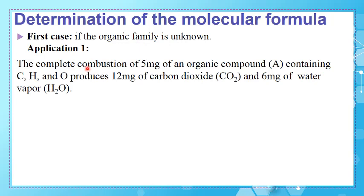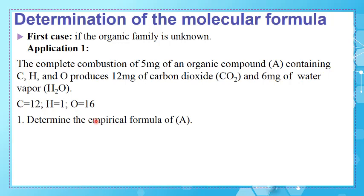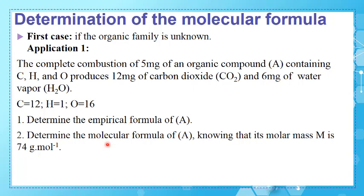The complete combustion of 5 mg of an organic compound A, containing only carbon, hydrogen, and oxygen, produces 12 mg of carbon dioxide and 6 mg of water vapor. We have three instructions: first, determine the empirical formula; second, determine the molecular formula given its molar mass M; and third, write the isomers of A.